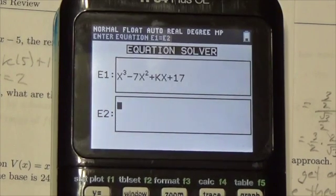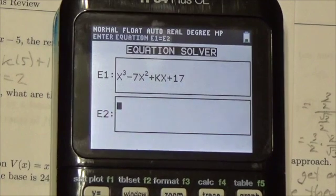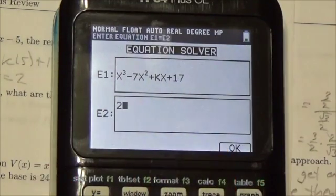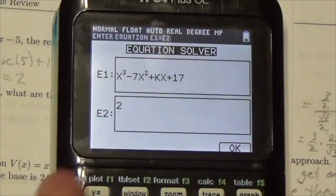I know that my remainder should be two. Now, if you've got the older version of the calculator, what you would have to do is make this minus two at the end, because the calculator thinks about it in terms of setting it equal to zero.